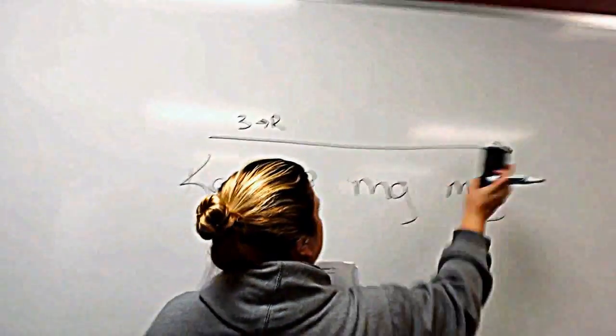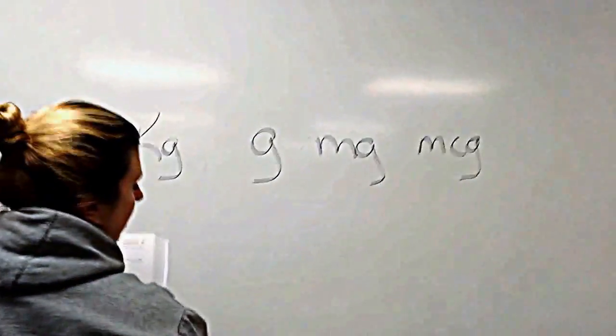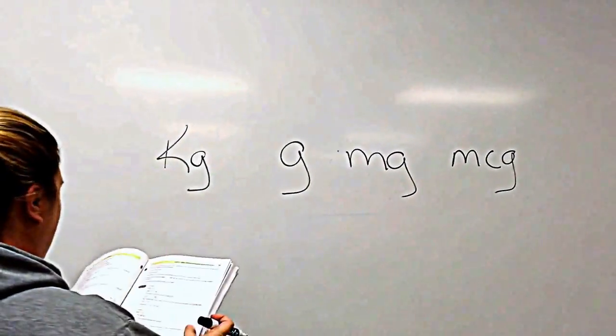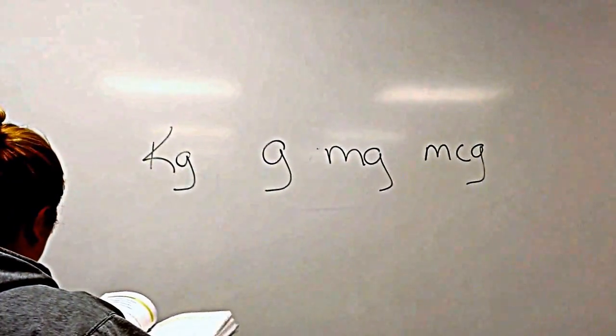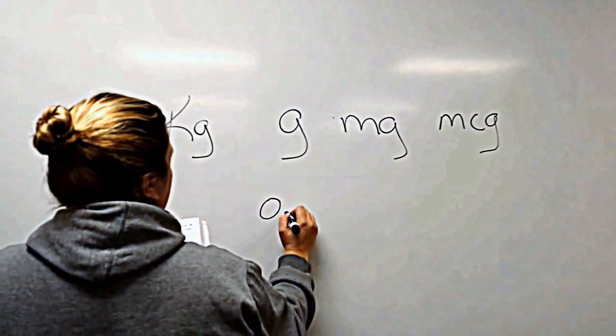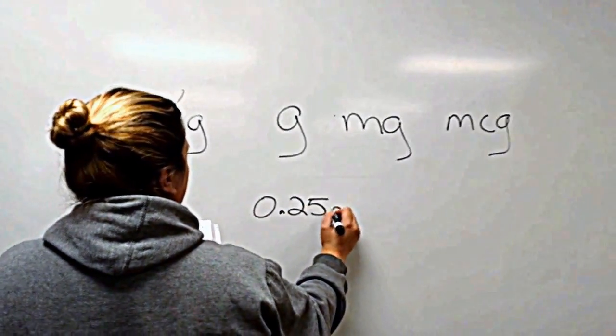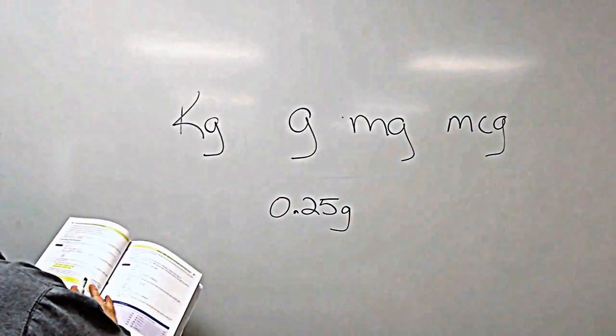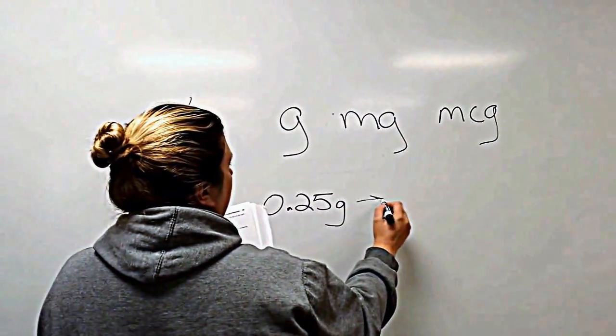If you write this down, it actually really helps before the test. Got that one wrong because I didn't write it down. And so the first example is 0.25 grams, and it wants you to go to milligrams.